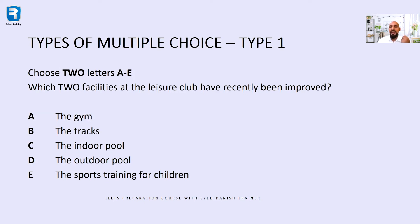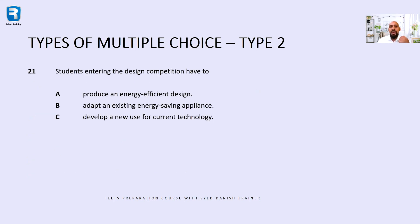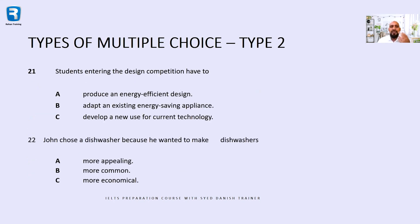It depends on which is the correct answer, but we have to choose two letters. This is the second method of multiple choice. For question 21, students are entering the design competition — there are A, B, C, three possible answers. In question 22, there is also a question with three possible answers. So you have to choose one answer. This is MCQ type 2.